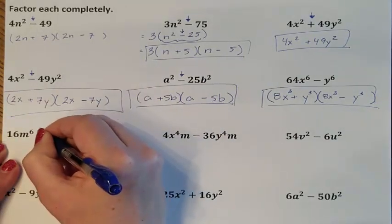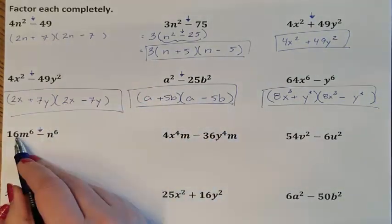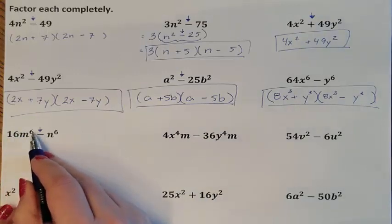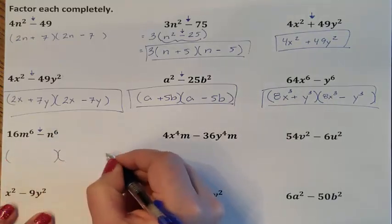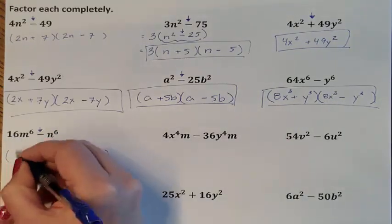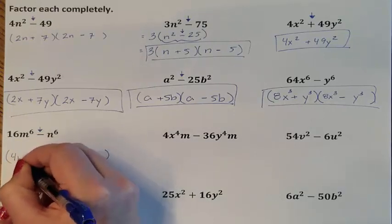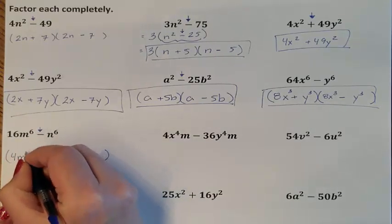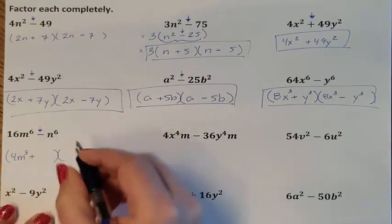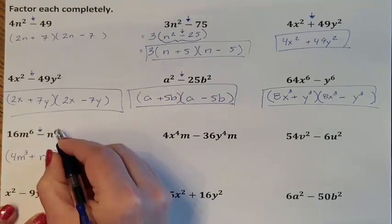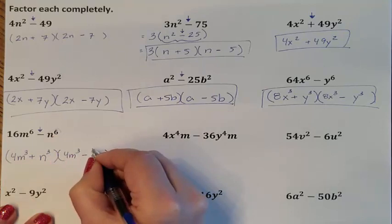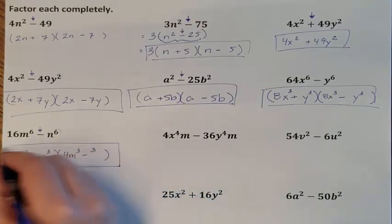This is a subtraction problem, so I can try the difference of two squares. I can square root 16. Can I divide the exponent by 2? Yes. Can I divide this exponent by 2? Yes. So I can do the difference of two squares. The square root of 16 is 4. Looking at the m's, 6 divided by 2 is 3, so my front terms are 4m to the third. That 6 divided by 2 is 3, so my exponents are 3's. So this is my final answer.